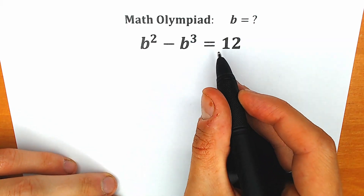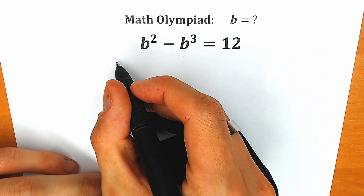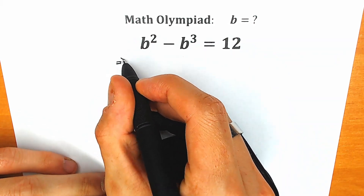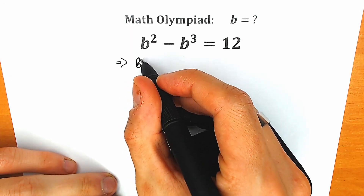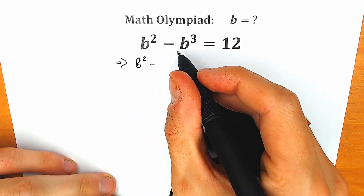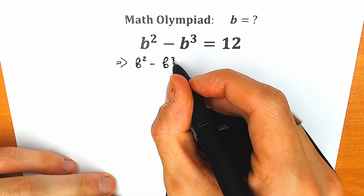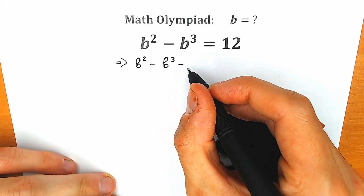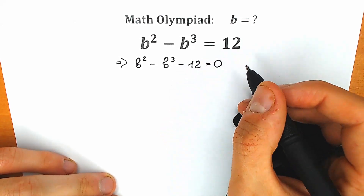First of all, let's subtract this 12 from both sides. This is our first step. We're going to write it as b² - b³, and we have minus 12, so we subtract this 12 from both sides.